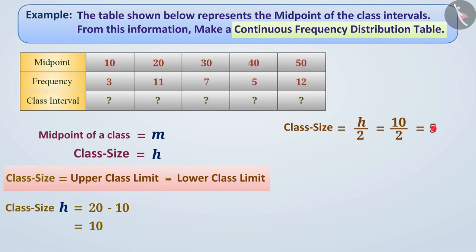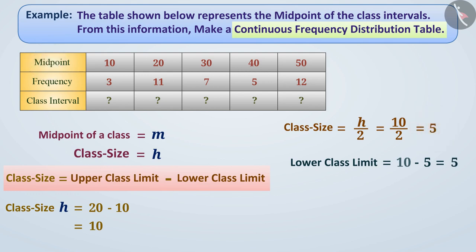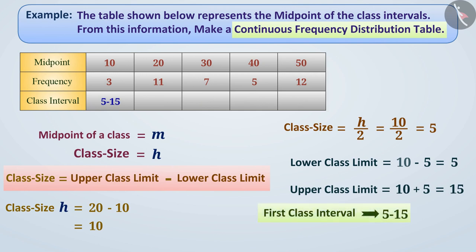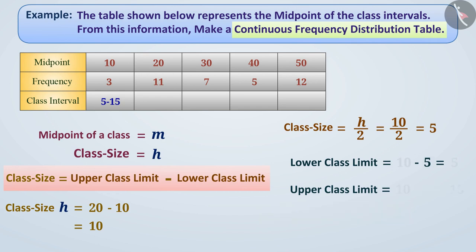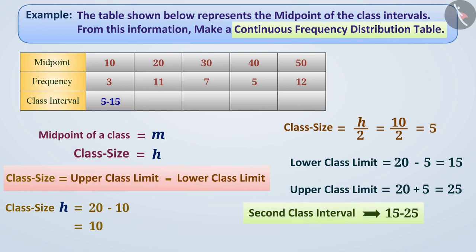If we subtract this difference from the midpoint, we get the lower class limit: 10 minus 5 equal to 5. Similarly, if we add this difference to the midpoint, we get the upper class limit: 10 plus 5 equal to 15. In this way, we get the first class interval 5 to 15. In the same way, we get the lower class limit 15 of another class by subtracting 5 from midpoint 20, and adding 5 to 20 to get the upper class limit 25. So the second class interval is 15 to 25. Similarly, we can find all class intervals, and make the continuous frequency distribution table from the information given.